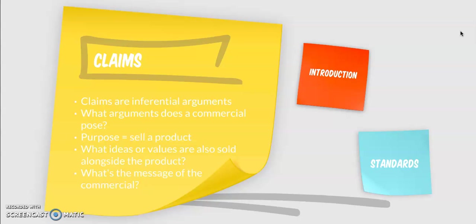The first thing that you want to do when you analyze an advertisement like this is to establish the claim, as you can see here with the yellow post-it. Claims are inferential arguments. A claim is an argument. That's the number one thing to remember. You will always be asked to determine the argument, and your task is to determine what a commercial's claim is.